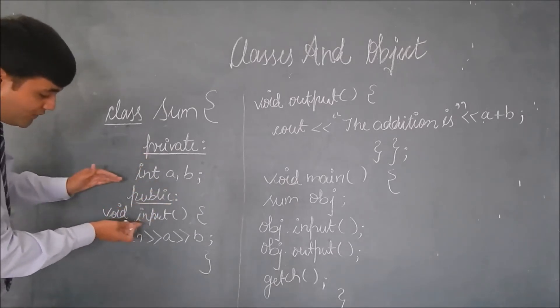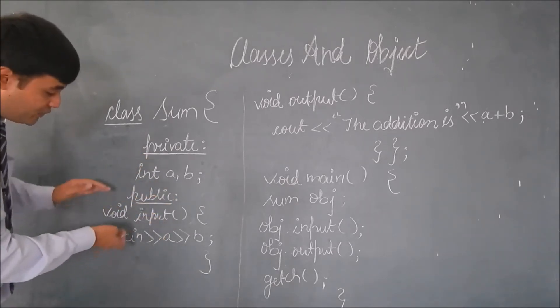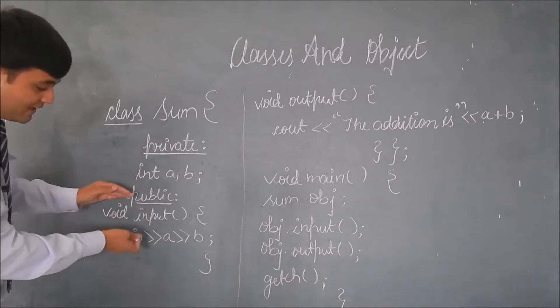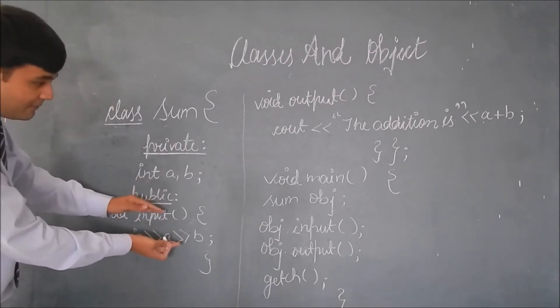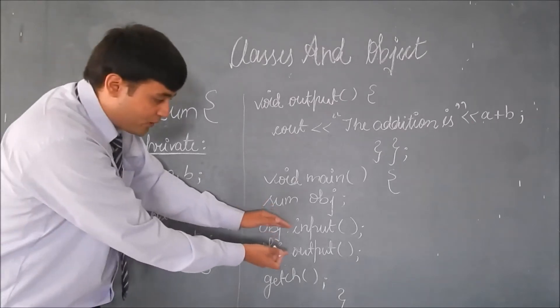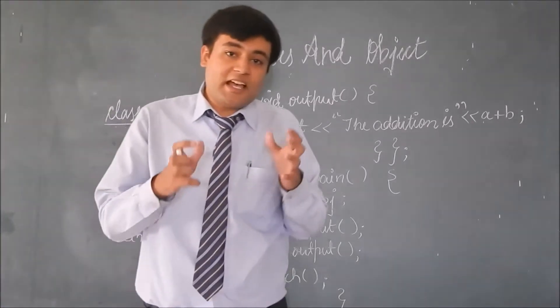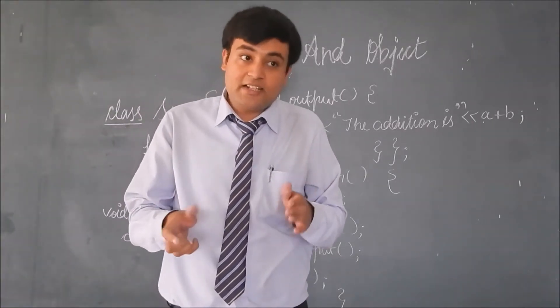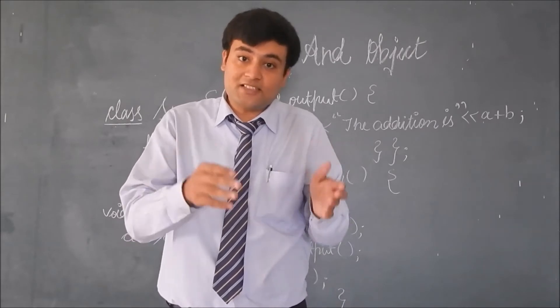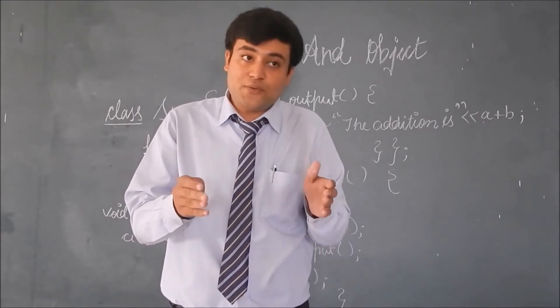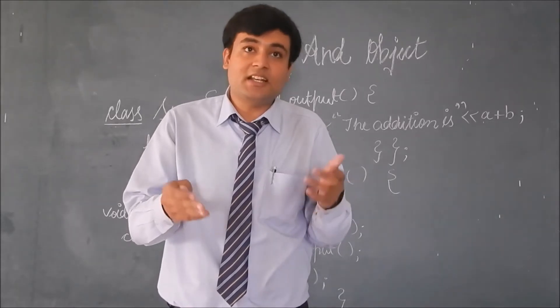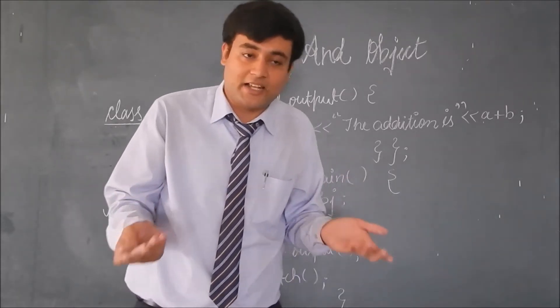Now we are taking the inputs. Inputs are in the public section, so they can access these data members A and B which could be used in the main program. The benefit of this access specifier is that it cannot be edited by external entities, hence saved from accidental additions or accidental deletions.